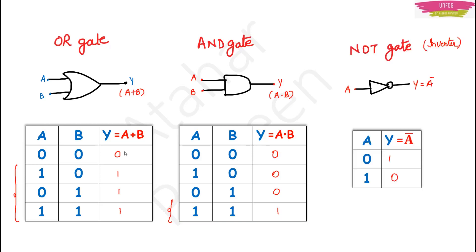Now for the NOT gate — this NOT gate will have only one input because we are taking complement. If the complement of 0 is taken, it will be 1, and the complement of 1 will be 0. So if input is 0, output is 1; if input is 1, output is 0. One important point: the NOT gate gives you the inverse answer, so you also call the NOT gate an inverter. This can be asked as an MCQ — not gate can also be treated as an inverter.